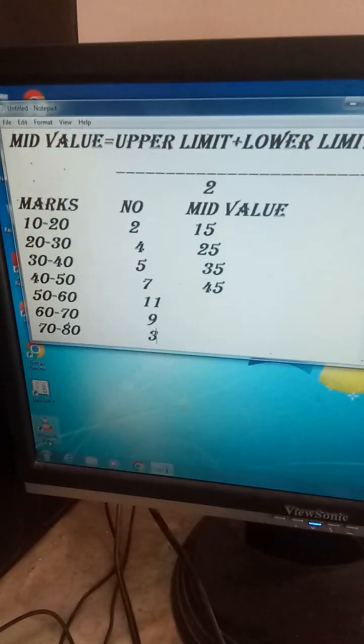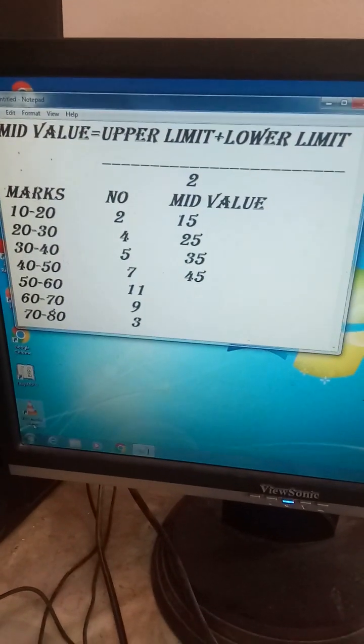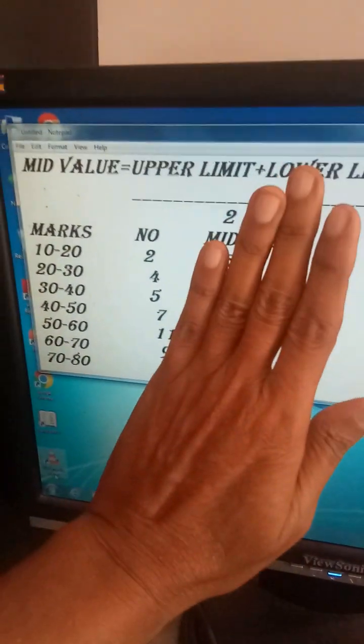If you look at the problem, this is very important. Mid-value is equal to lower limit plus upper limit divided by 2. These two columns are given.